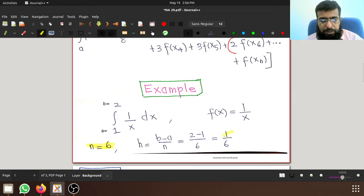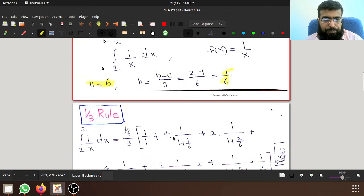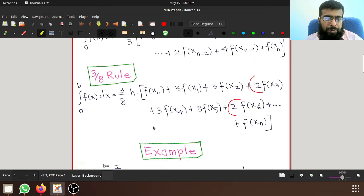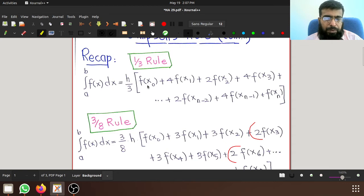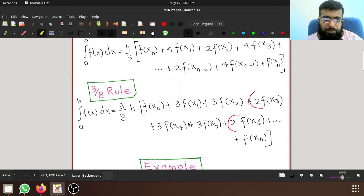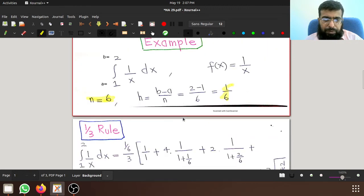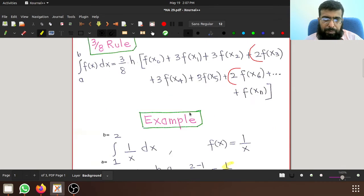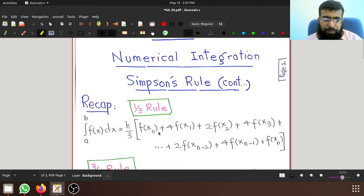So h comes out to be 1 over 6. So let's apply the first rule, one-third rule first. h over 3, this is the rule: h over 3 f of x naught, 4 times f of x1, 2 times f of x2, and so on. Before we apply f of x naught, before we compute f of x1, let's see what these values are.